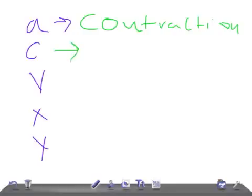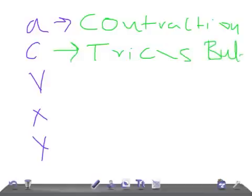The C wave is due to tricuspid bulging. So this is about the tricuspid bulging.